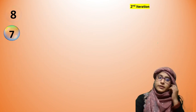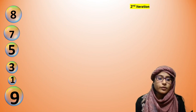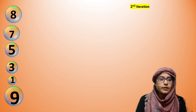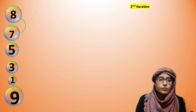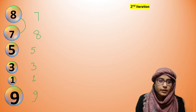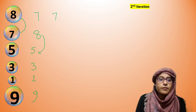Now let's talk about the second iteration. In the second iteration, 9 is already sorted at the back, so we start from the beginning again. Check 8 and 7: 8 is greater than 7, yes — then swap. 7 will be here. Then again, come here: 8 is greater than 5, yes — swap. Now we have 7, 5, 8, 3, 1, 9.